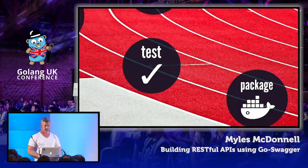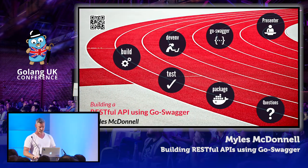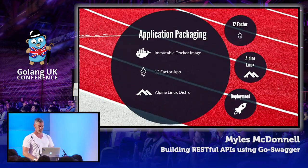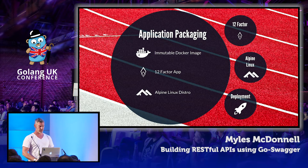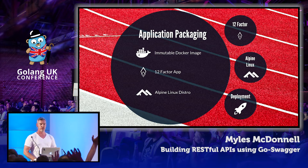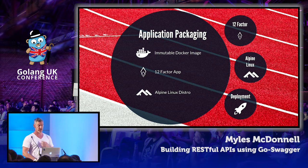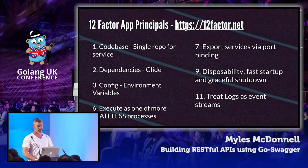We built something, we tested it, it works — wonderful. Where do we go from here? Let's package it up. We're going to package this as an immutable Docker image and follow 12-factor app principles. I'm also going to use Alpine Linux as our base distro. I've picked out seven of the 12-factor app principles worth bringing up during this talk.